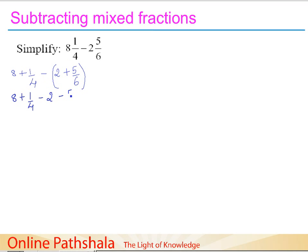We separate the whole and fractional parts. On one side we have 8 minus 2, and on the other side we have 1/4 minus 5/6. The whole part subtraction is straightforward: 8 minus 2 gives us 6.